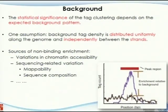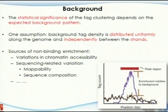So what is the background signal? The statistical significance of tag clustering depends on the expected background pattern. One assumption that most people make is that the background tag density is distributed uniformly along the genome and independently between strands. You can see one example here: the blue one is the ChIP-enriched signal and the black one is the background signal. You can clearly see the background is not keeping up with the ChIP-enriched signal, so you can have a certain level of confidence to say this is a real ChIP-derived enriched peak. But if your background at that location happens to show the same type of pattern, you probably won't define it as a peak. That's why, to calculate statistical significance, you need to see both what the signal looks like and what the background looks like.